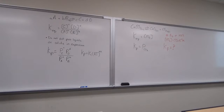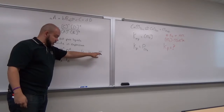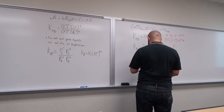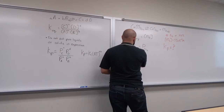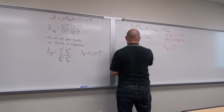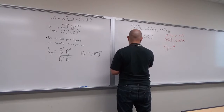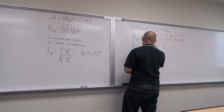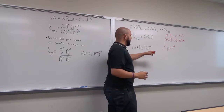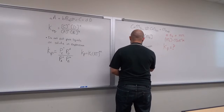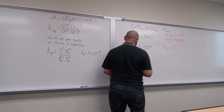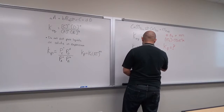We need Kc, R, T, and delta N, realizing that RT and delta N are all in parentheses. So Kp = Kc(RT)^ΔN. What is our delta N? One — positive one — because we have one gaseous product and zero gaseous reactants. Therefore delta N = 1.